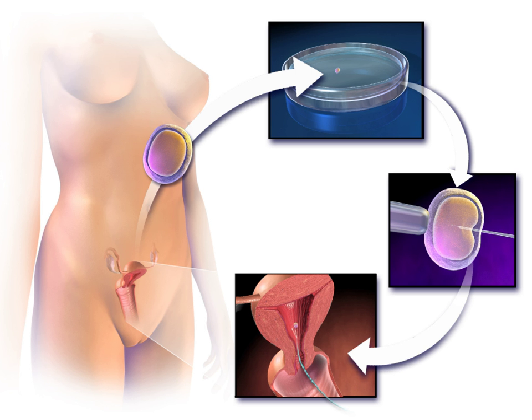With ART, the process of sexual intercourse is bypassed and fertilization of the oocytes occurs in the laboratory environment. In general, ART procedures involve surgically removing eggs from a woman's ovaries, combining them with sperm in the laboratory, and returning them to the woman's body or donating them to another woman.